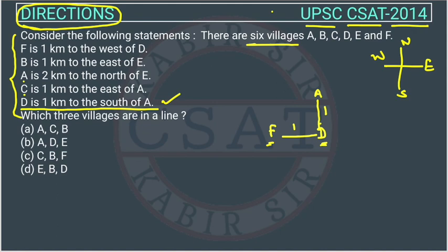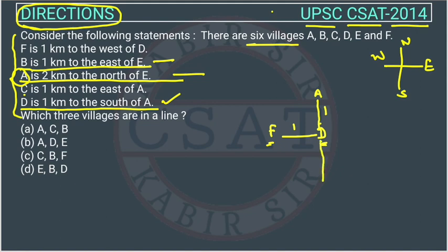Now we want a statement using F, D, or A as a reference. The statement 'A is 2 kilometers to the north of E' is useful because we have already plotted A. Since A is in the north of E, E will be 2 kilometers below A — which places E here, 1 kilometer below D.